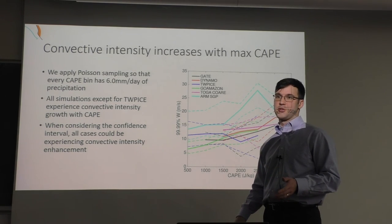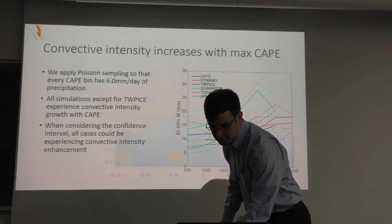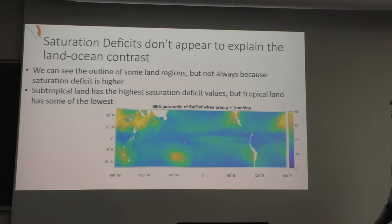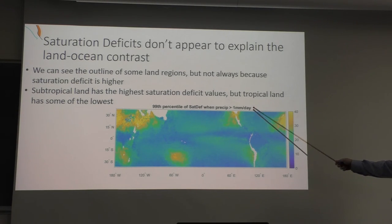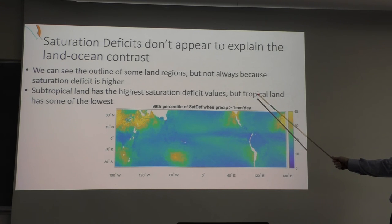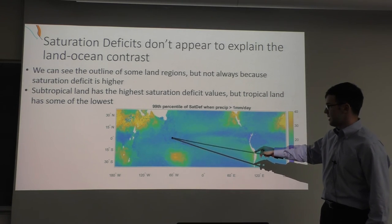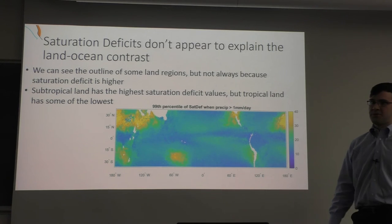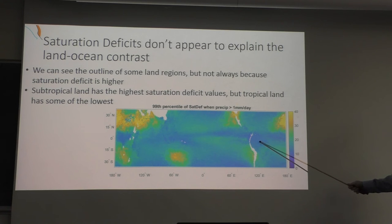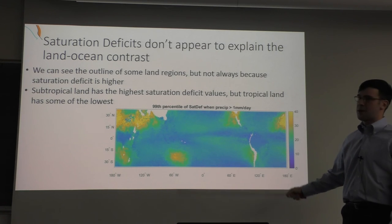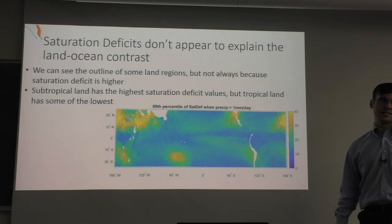However, saturation deficits don't appear to explain the land-ocean contrast. A map of the 99th percentile of saturation deficit when precipitation is greater than 1 mm/day — using TRMM 3B42 precipitation and ERA-Interim saturation deficits — shows you can see the outline of some continents, but the contrasts aren't the same as the land-ocean lightning contrast. Saturation deficit isn't higher over tropical land — it's actually lower. The only areas where saturation deficit is high are over subtropical land areas, which makes sense as they're the driest precipitating regions.